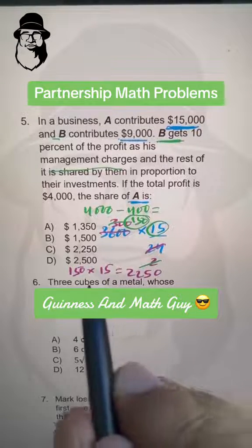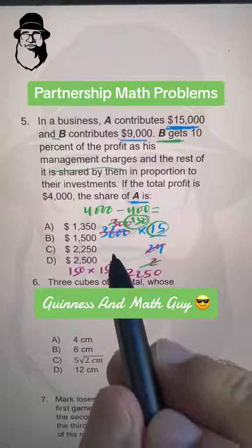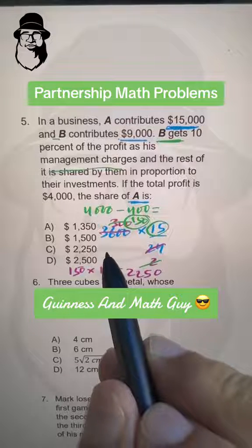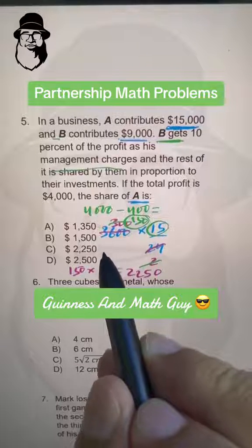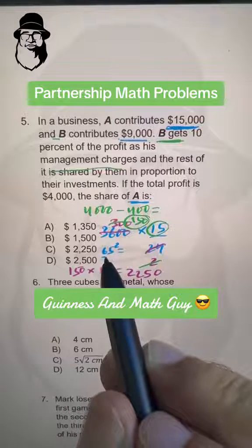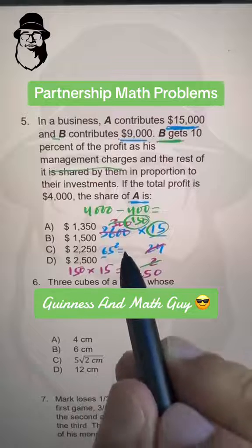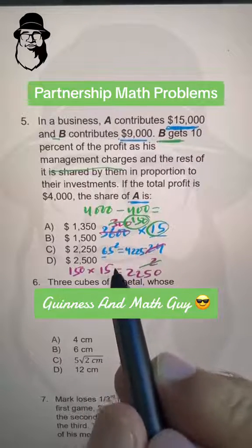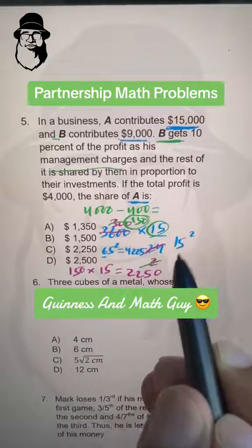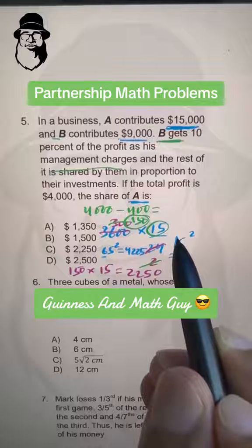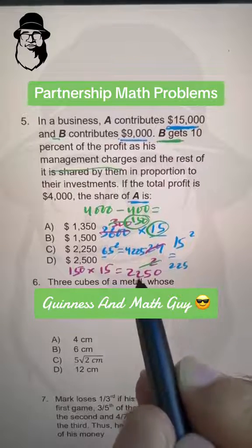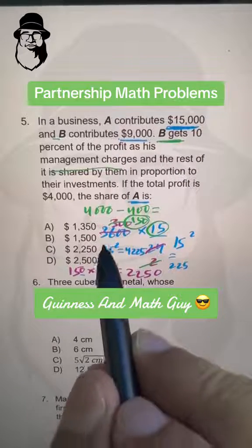How did I get 225? Any number ending in 5 — like 65 — its square is very easy. We just multiply 6 by its next number, 7: 6 times 7 is 42, then write 25, giving 4225. Applying the same logic to 15 squared: 1 times 2 is 2, then write 25, giving 225. So the answer is 2250. That's answer choice C.